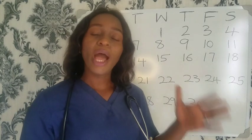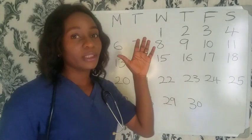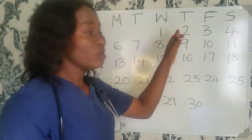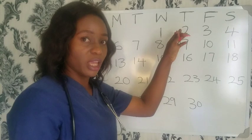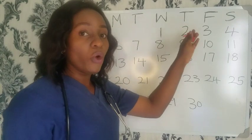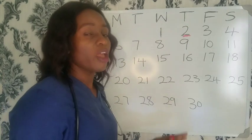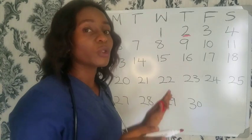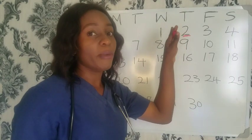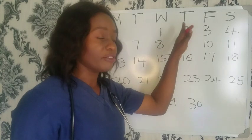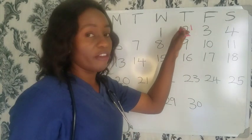To know your menstrual cycle, you have to count from the first day of your menstrual period. For example, using this calendar, if your menstrual period started on the 2nd of November 2023, that is when your menstrual cycle starts. From that first day of your bleeding to the day before the next menstrual period is considered your menstrual cycle. So November 2nd is your day 1.